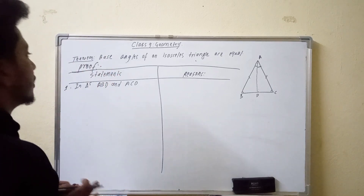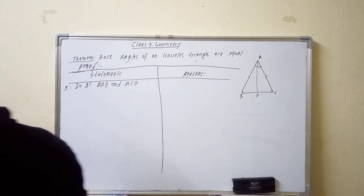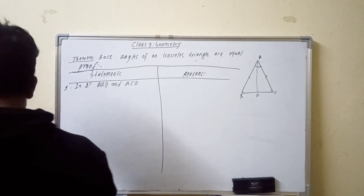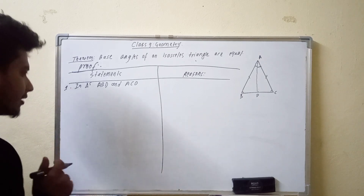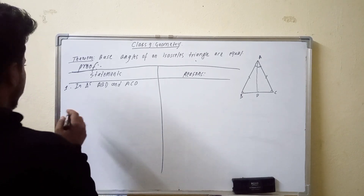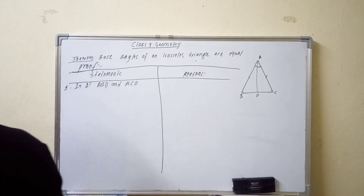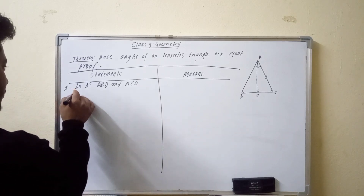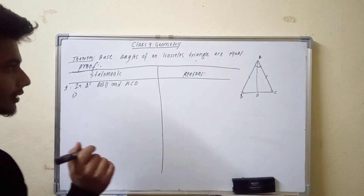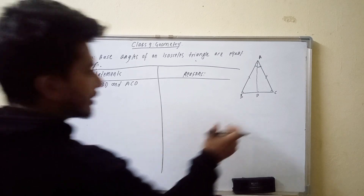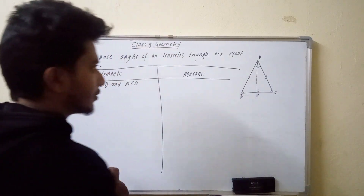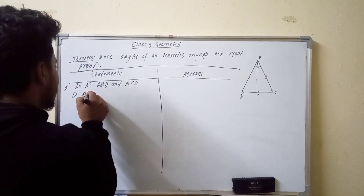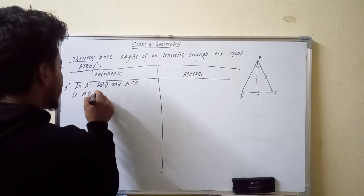This is a base angle — the triangle is equal to the triangle. So the triangle is similar to the triangle. The triangle is equal to the triangle.